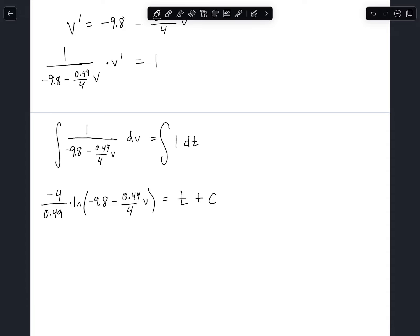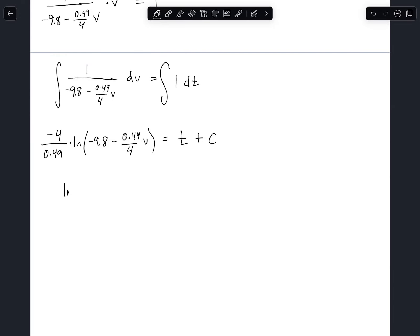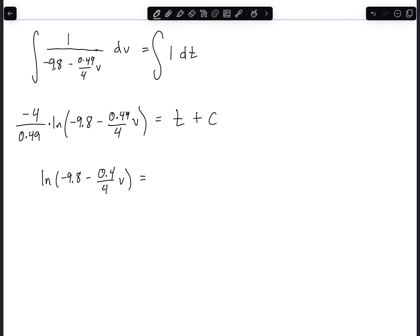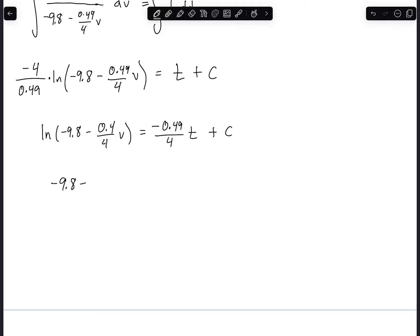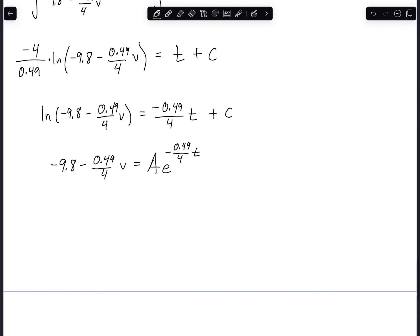Now we keep solving for V. And let's see, we get the natural log of negative 9.8 minus 0.49 over 4 V is equal to invert and multiply. So negative 0.49 over 4 T plus C and all that other constant multiplied by that. We'll just get absorbed into the plus C. So then we'll get negative 9.8 minus 0.49 over 4 V equals A e to the minus 0.49 over 4 T. So there we exponentiated both sides to get rid of the log. And so now we can add the 9.8 and we can multiply by the reciprocal to get just V. And so V of T is equal to negative 4 divided by 0.49 times 9.8 plus A e to the negative 0.49 over 4 T.